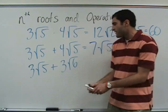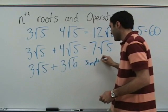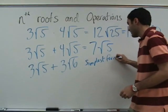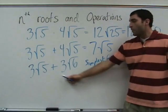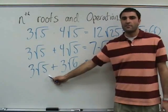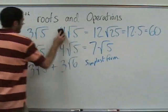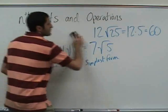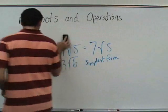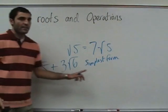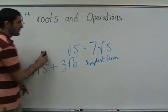These cannot be combined — they're not like terms — so we leave it in simplest form. It wouldn't be 6 root anything. These are not like terms, so we cannot combine them.